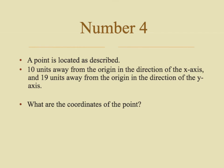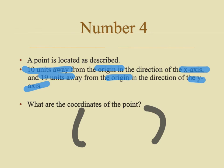Number four: go ahead and pause the video, read this problem, and then find the coordinates of the point. The problem tells us that a point is located as described: 10 units away from the origin in the direction of the x-axis, and 19 units away from the origin in the direction of the y-axis. Remembering that in my ordered pair my x comes first and my y comes second, it is 10 units away in the direction of the x and 19 away in the direction of the y. So my ordered pair would be (10, 19).